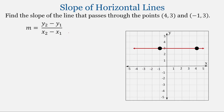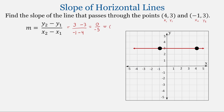So let's find this slope. I'll label this be point 1: x₁ and y₁, and the second point x₂ and y₂. This gives us y₂ minus y₁ over x₂ minus x₁, so 3 minus 3, all over negative 1 minus 4. That's 0 over negative 5. Zero divided by anything will be zero.